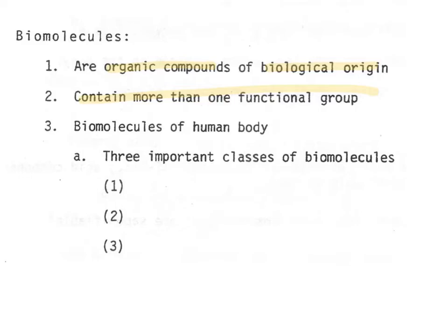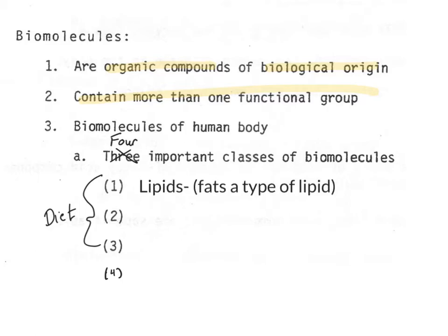In this class, we're actually going to focus on four — I know it says three — four important classes of biomolecules. The first three are important because they're things you'll find in nutrition. Most people can think of these by their dietary functions. One is a low-fat diet, so fats are one of the classes. We don't actually call them fats in science; we're going to call them lipids, which is a slightly broader category than fats.